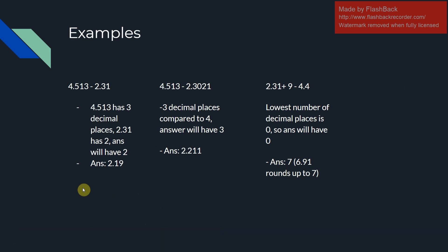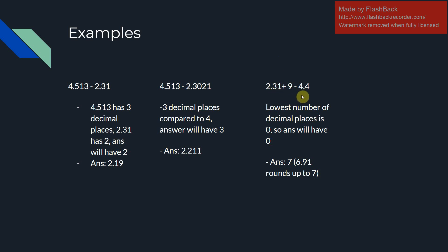For 4.513 minus 2.31 — this has three decimal places while 2.31 has two, so the answer has two decimal places: 2.19. For 4.513 minus 2.3021 — three decimal places versus four, so the answer has three: 2.211. For 2.31 plus 9 minus 4.4 — 2.31 has two decimal places, 4.4 has one, but 9 has none, so the answer also has none. The regular answer would have been 6.91, but 9 rounds up, so the answer is just 7.